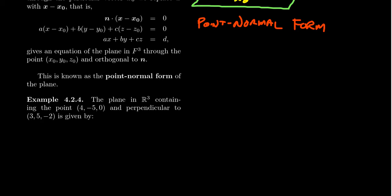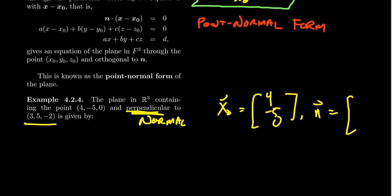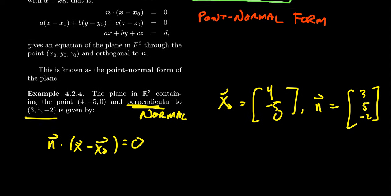If we want to construct a plane in R3 which contains the point (4, -5, 0) and is perpendicular to (3, 5, -2), perpendicular here suggesting this is the normal vector in play. What we then have is: x₀ is given by the coordinates (4, -5, 0), our normal vector n is given by (3, 5, -2). Using the point-normal form, we're going to get n · (x - x₀) = 0.